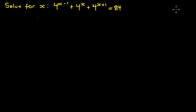We are given: 4 exponent (x minus 1) plus 4 exponent x plus 4 exponent (x plus 1) is equal to 84.